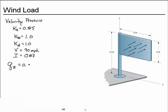Put those all together, and our velocity pressure is 0.00256 times 0.85 times 1 times 1 times the 90 miles per hour squared times the 0.87 importance factor. Put all of those together, and we get 15.33 pounds per square foot.